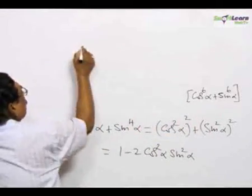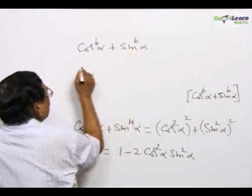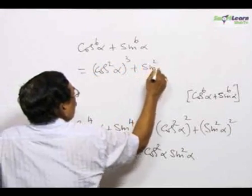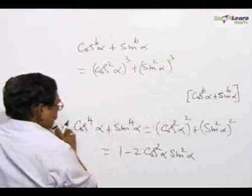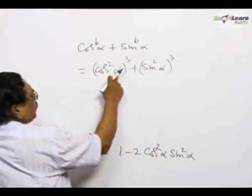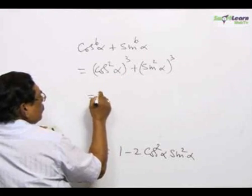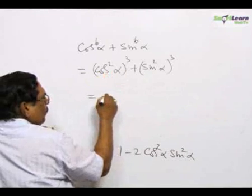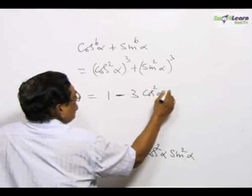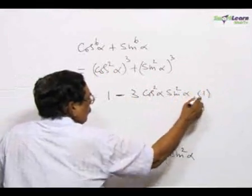Similarly, we simplify cos power 6 α + sin power 6 α. This can be written as (cos² α)³ + (sin² α)³. Using the identity a³ + b³ = (a + b)³ − 3ab(a + b), this becomes (cos² α + sin² α)³ − 3cos² α · sin² α · (cos² α + sin² α), which equals 1 − 3cos² α · sin² α, since (cos² α + sin² α) = 1.